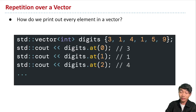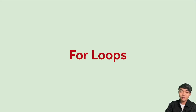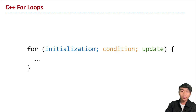So there has to be a better way to do this — and there is. This is what loops are used for. This is the syntax for what the standard for loop looks like in C++.